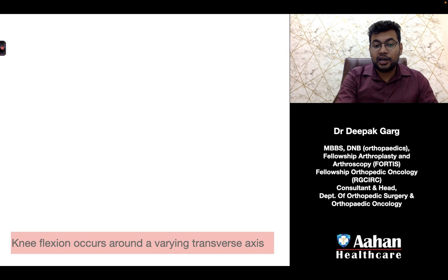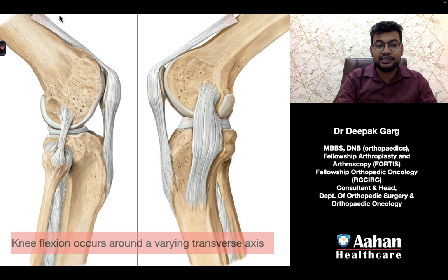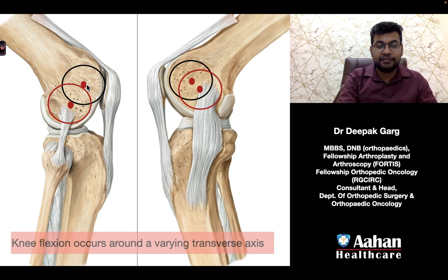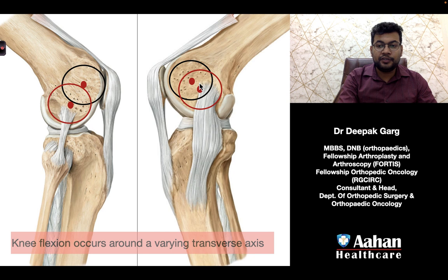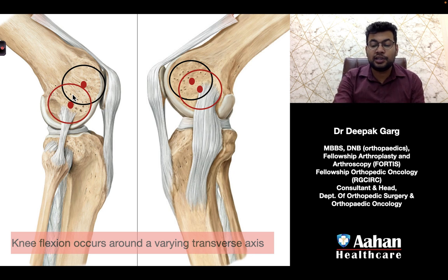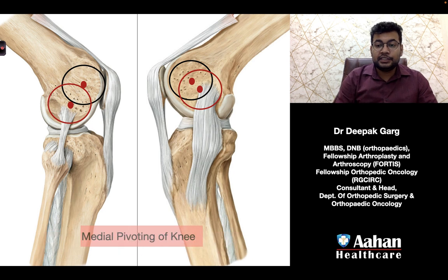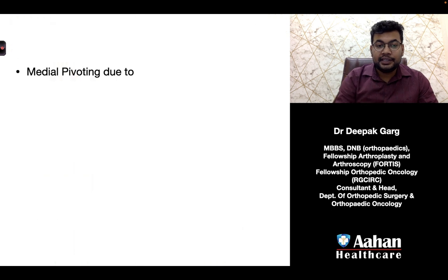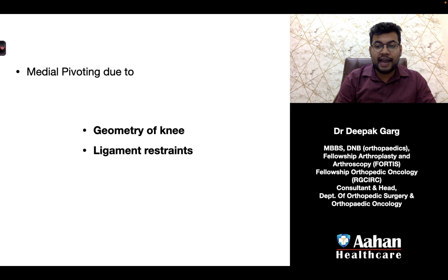Knee flexion occurs around a transverse axis. From the diagram we can see the lateral condyle and the medial condyle with their respective transverse axes. The distance of the transverse axis over the medial condyle is much lesser compared to the lateral condyle. This means the medial condyle moves much less than the lateral condyle — the lateral femoral condyle has much greater translation — and this phenomenon is called medial pivoting of the knee joint, due to the geometry of the knee and ligament restraints.